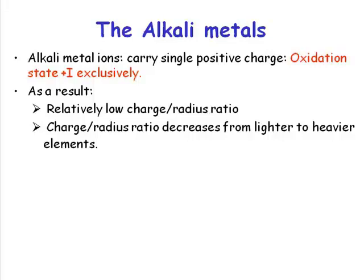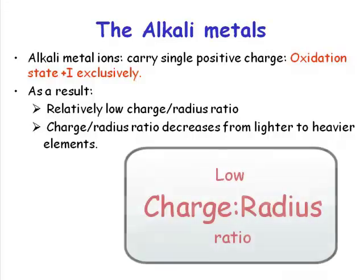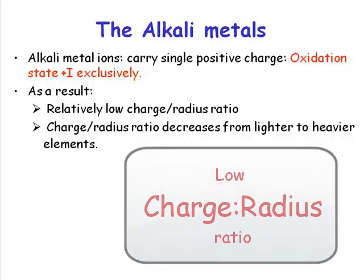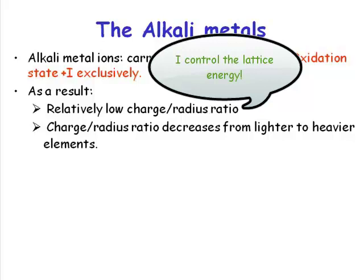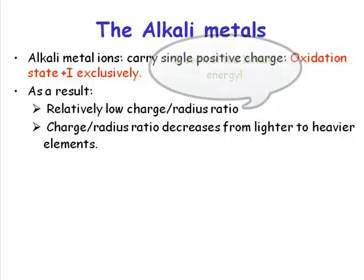What you're going to have is a monopositive charge on your ion. And because the positive charge is just one and you have an ion, then essentially what you have is a relatively low charge-to-radius ratio. And it's important to appreciate that the charge-to-radius ratio is a factor that controls the lattice energy. So what we have is a relatively weak monopositive charge.